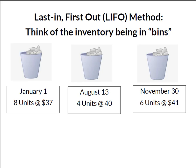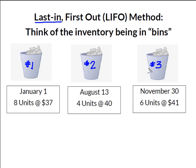Now we're going to look at it from a last-in first-out perspective. January 1 is still bin number 1, bin number 2, and bin number 3 — that's the order we made the purchases. But we're going to go last in first out, so instead of starting with bin 1 I'm going to begin with bin 3, my latest purchase, my last purchase.